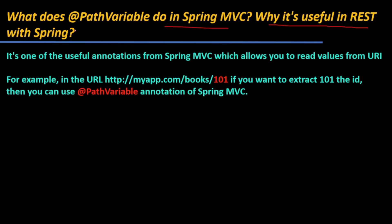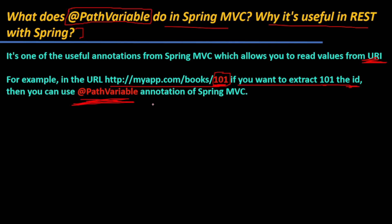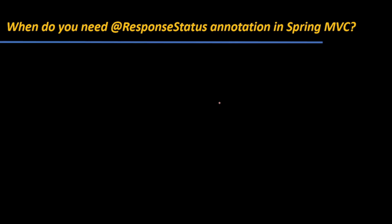The next question is: what does @PathVariable do in Spring MVC and why is it useful? @PathVariable is a useful annotation in Spring MVC that allows you to read a value from the URI. For example, if you have the URL myapp.com/book/101, and you want to extract the id value 101, you use the @PathVariable annotation to bind that URI segment to your method parameter.